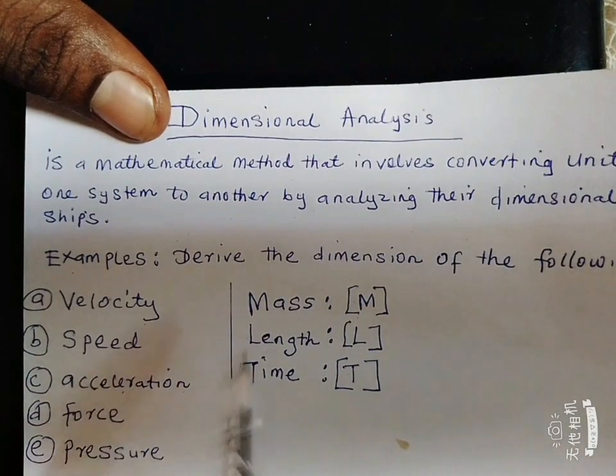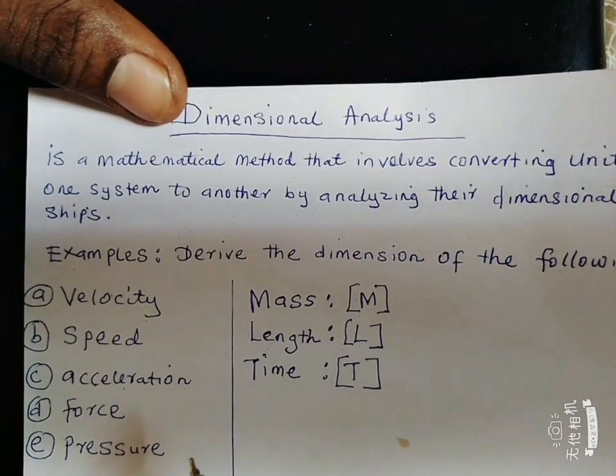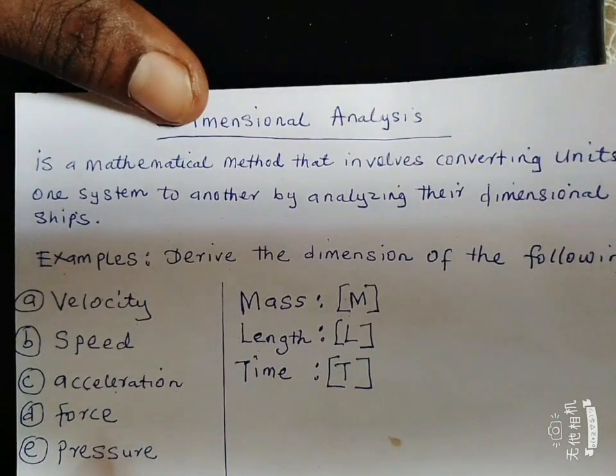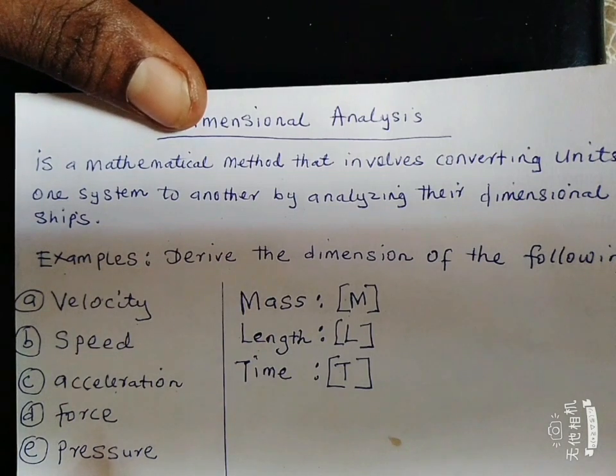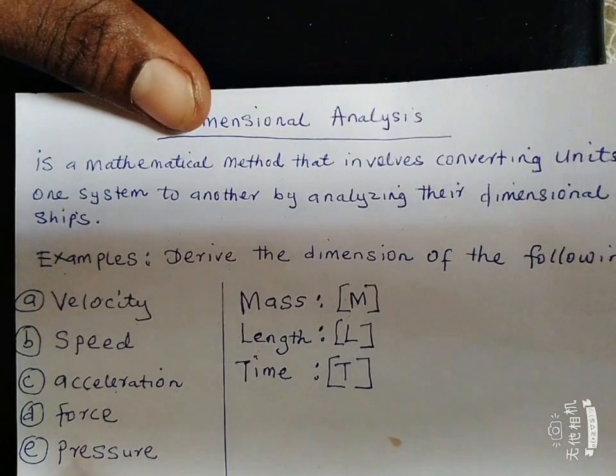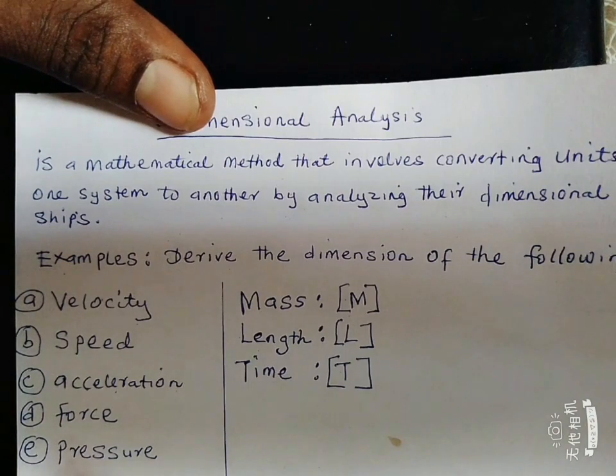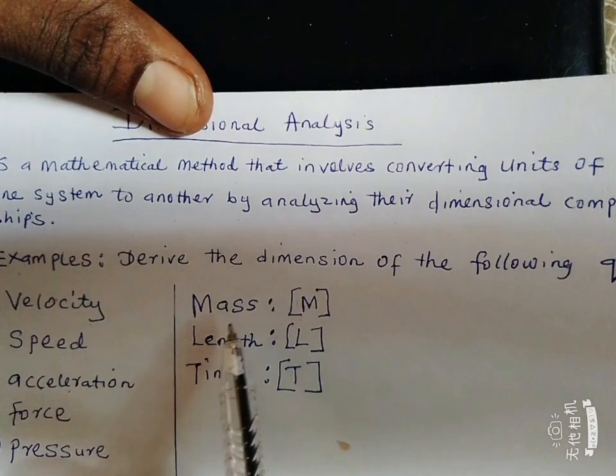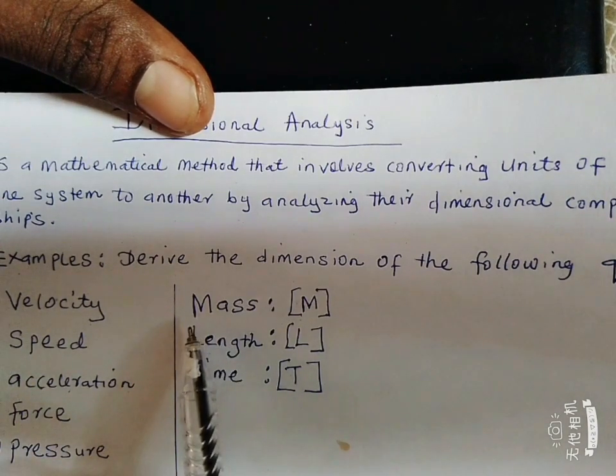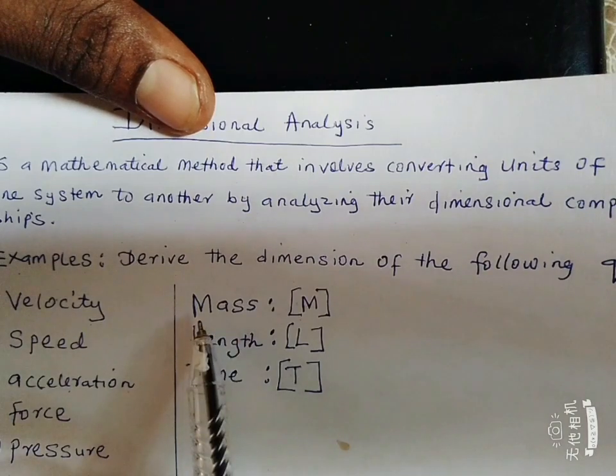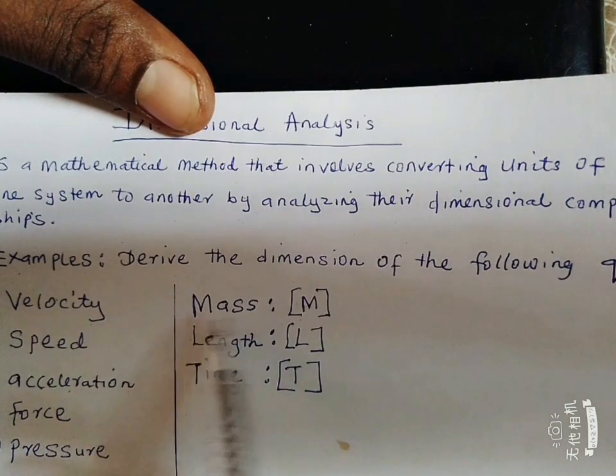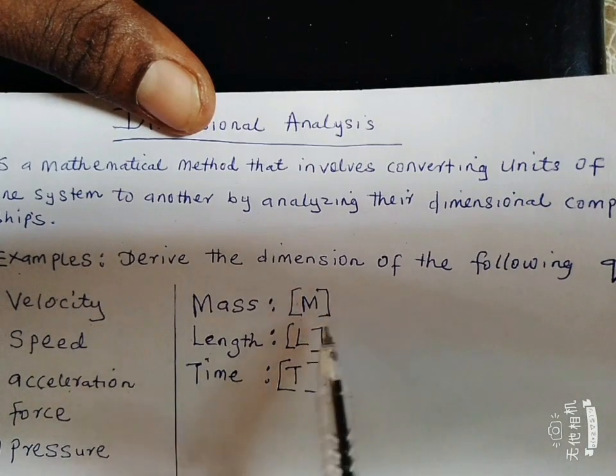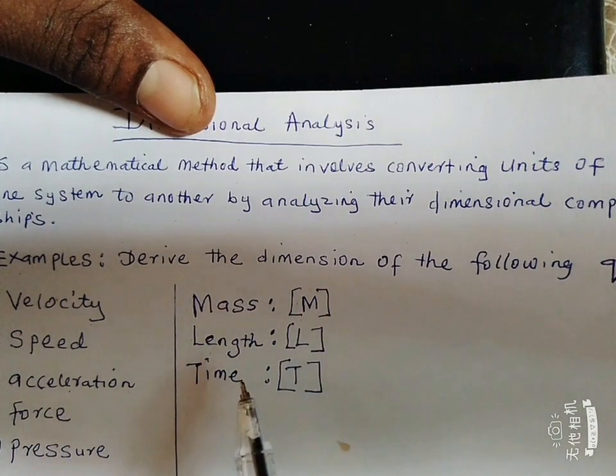Before we move into some examples that you may likely encounter in dimensional analysis in physics, I would like to tell us about three main basic quantities used in quantum mechanics. The first basic quantity is mass, and we represent it with the first letter of the quantity. Mass we use capital M to represent it and we enclose it in a brace bracket.